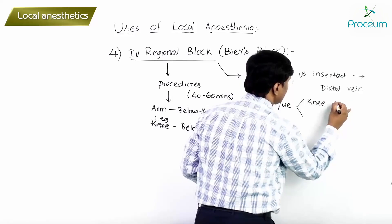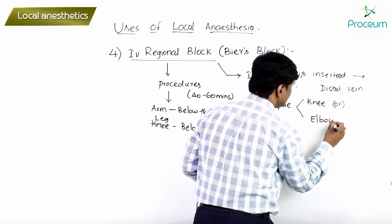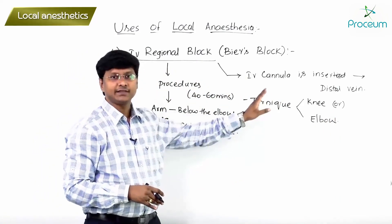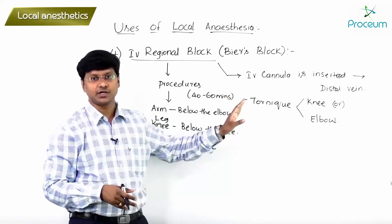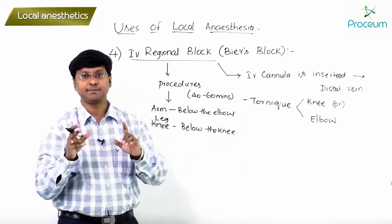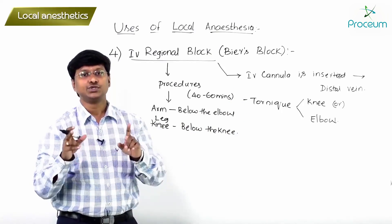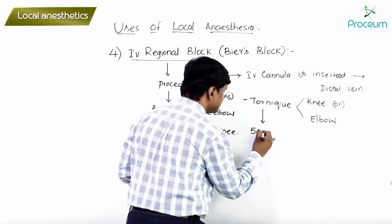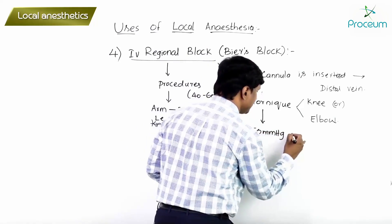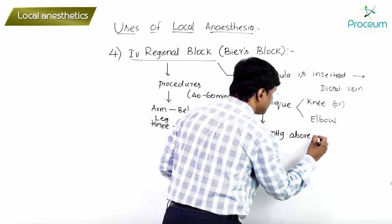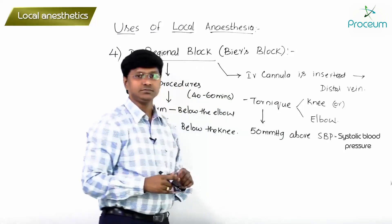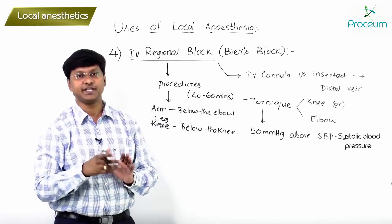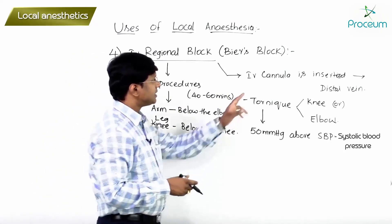After this, we apply the tourniquet over the knee or elbow wherever the surgery is planned. The pressure in the tourniquet should be maintained at least 50 millimeters of mercury above the systolic blood pressure.